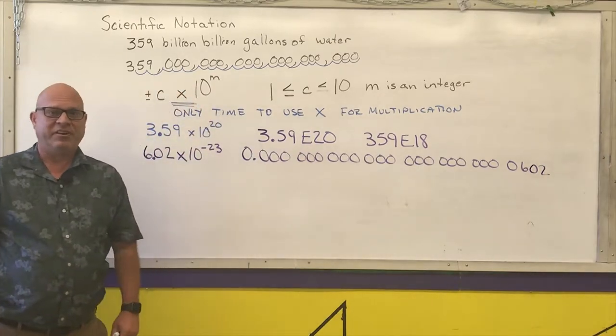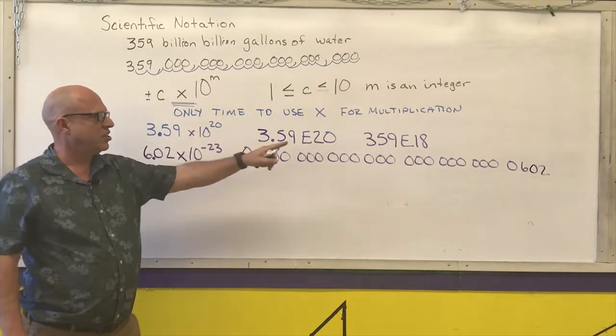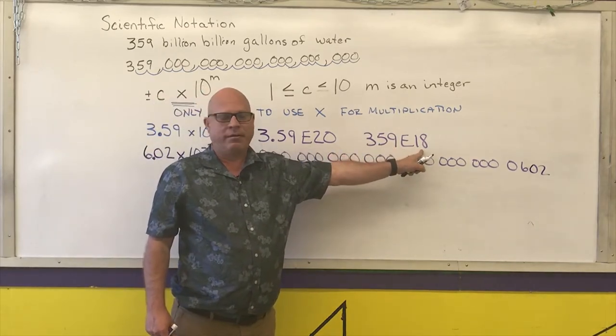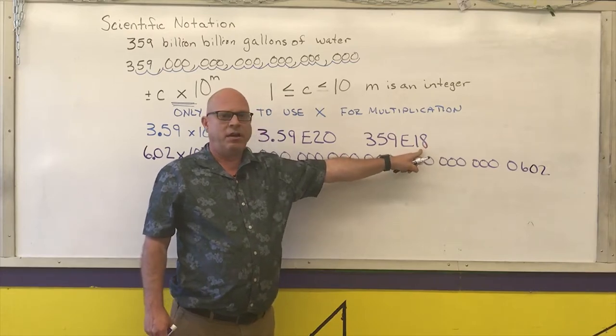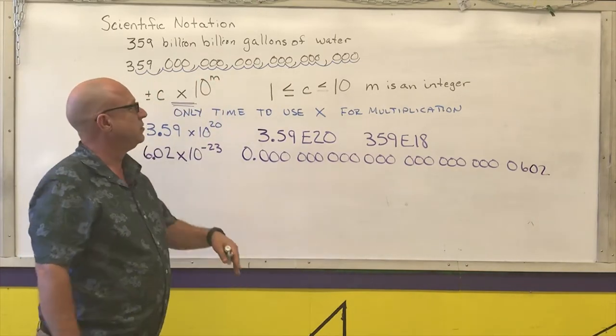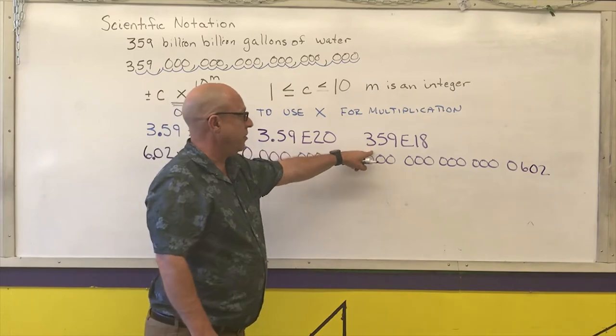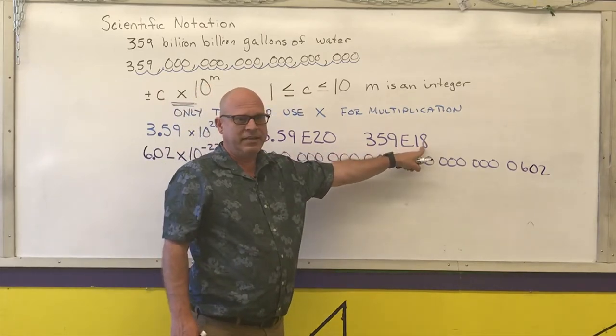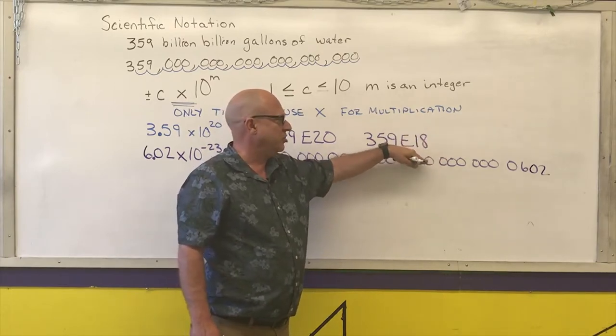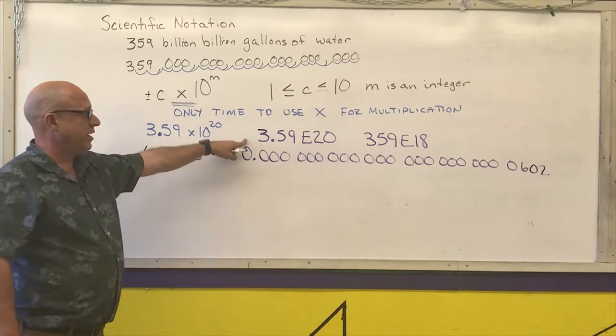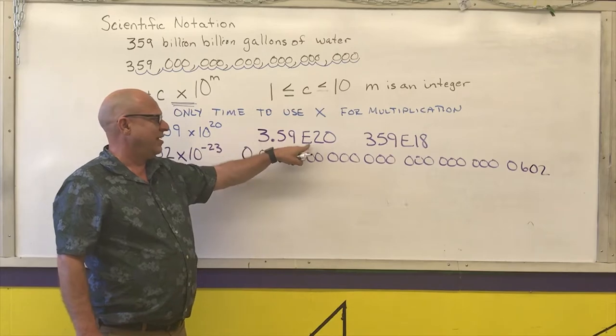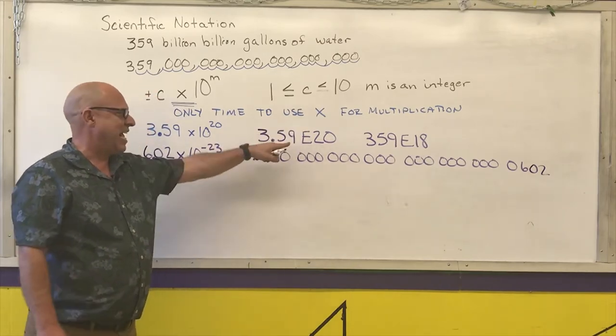Sometimes your calculator, they have regular scientific notation mode and what's called engineering mode. An engineering mode only gives you exponents to the power of 10 that are multiples of 3, which are our thousands, millions, billions, trillions. That way, I can say that's 359 billion billion. So engineers use it in powers of 3. Regular scientific notation on your calculator, it may show up as 3.59 times E to the 20th with a capital E there.